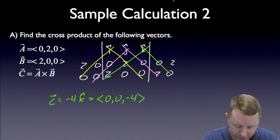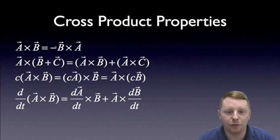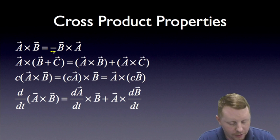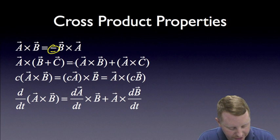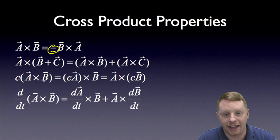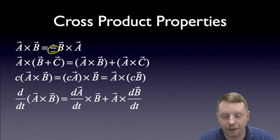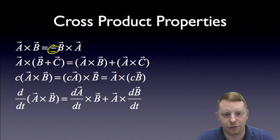Here are some important properties of cross products. a cross b equals the negative of b cross a — you cannot simply switch them; the negative sign matters. a crossed with the quantity (b + c) equals (a cross b) plus (a cross c). A constant c times the quantity (a cross b) equals (c times a) crossed with b, or a crossed with (c times b). The derivative of (a cross b) equals (da/dt cross b) plus (a cross db/dt).